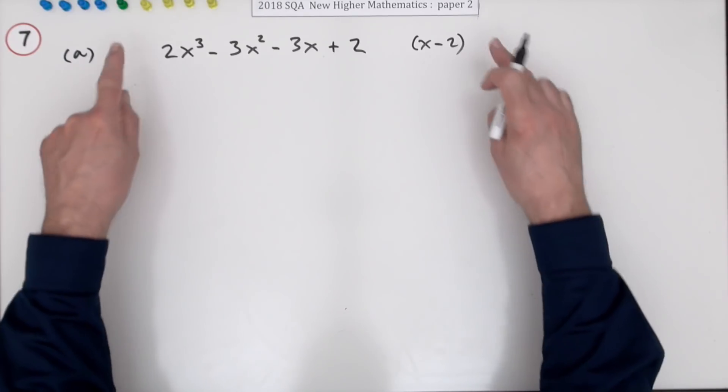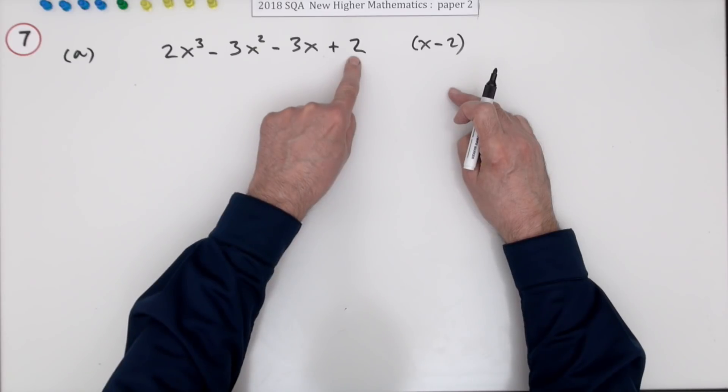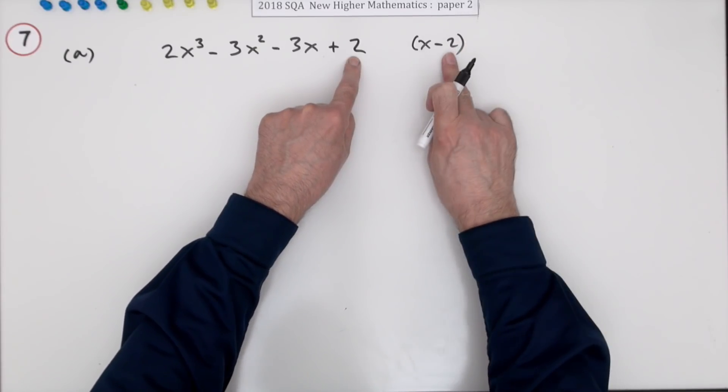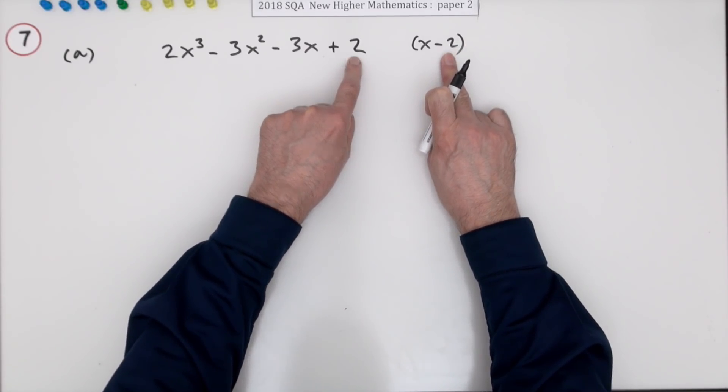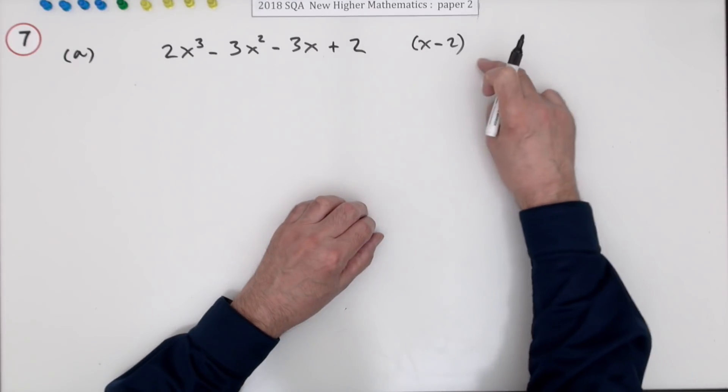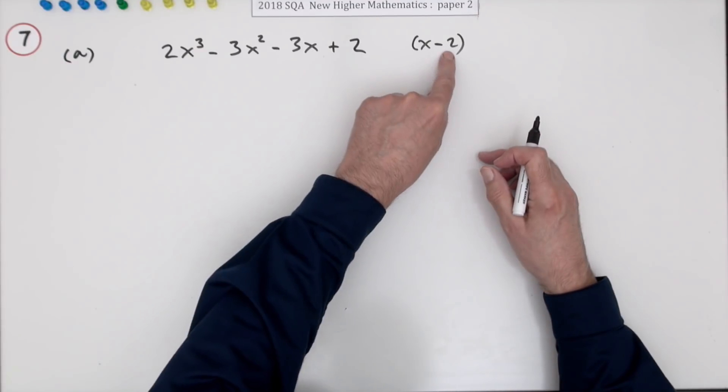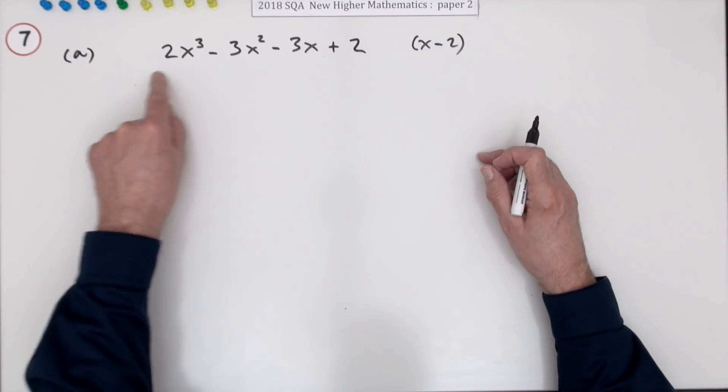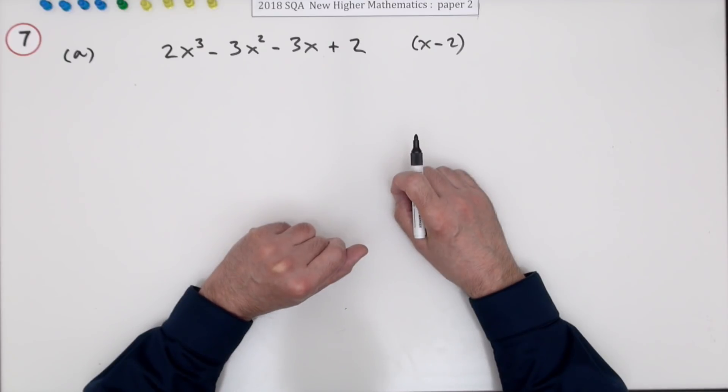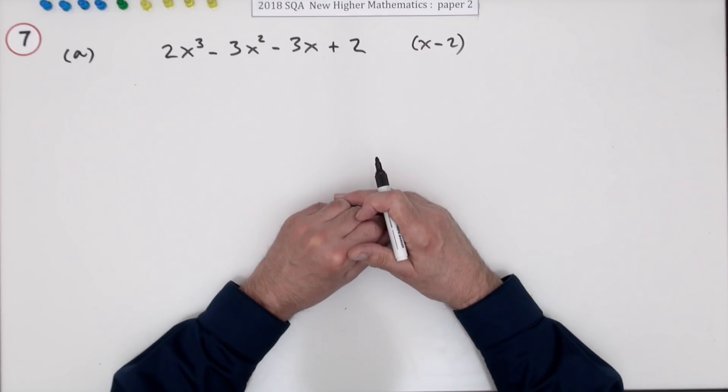The other way is to use the theorem that the value of this expression putting the number 2 into it is the same as the remainder that you would get if you were to divide by the factor x minus that number. So one way would be to put 2 into this and see if the value comes to zero because that then means the remainder in dividing by this factor would also be zero.